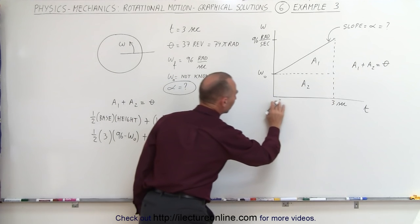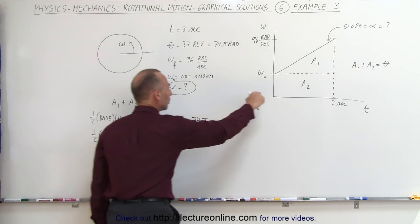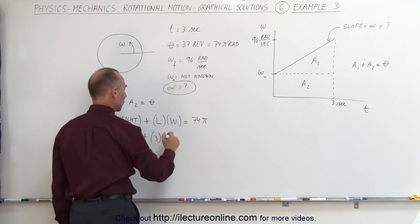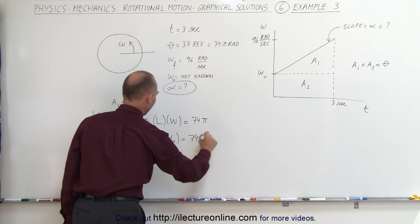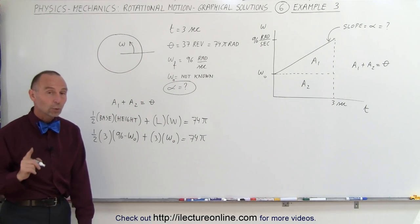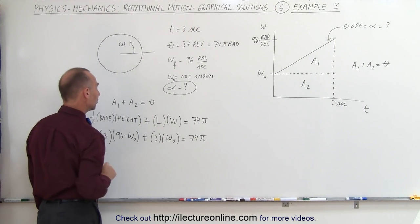Plus the length, that would be this length of the rectangle which is 3 seconds. And the width, that would be the width over here, which is from 0 to omega sub naught. So simply call it omega sub naught. And this is equal to 74π. Now notice that this equation now only has one unknown in it, which is omega sub naught. And that's what we're going to be solving for.